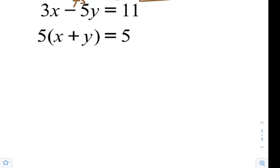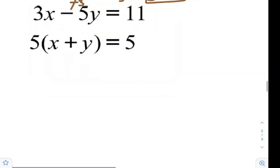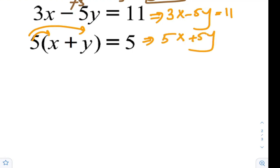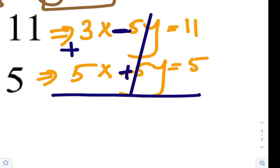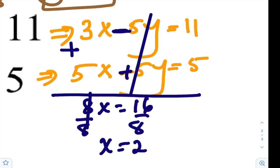Let's solve this question. This question cannot be solved directly since you have brackets. The first one is ready. The second one should be distributed first. So it will be 5x and then 5y equals 5. Now can we have here direct elimination? Yes we can. We can add because we have here negative 5y plus 5y.